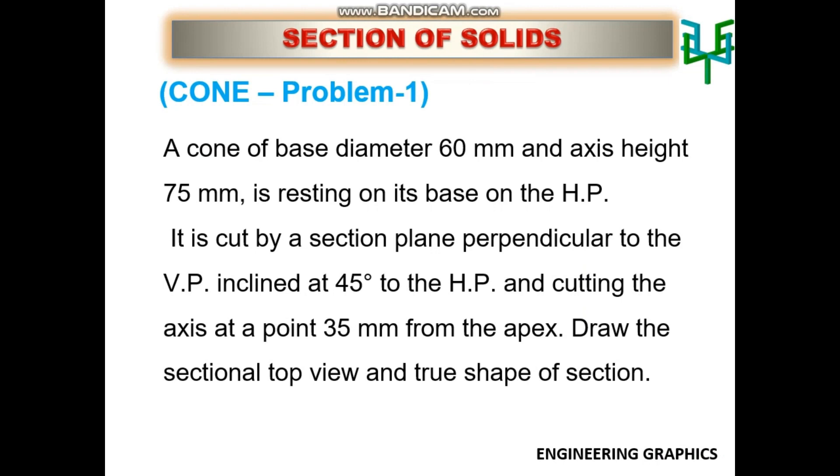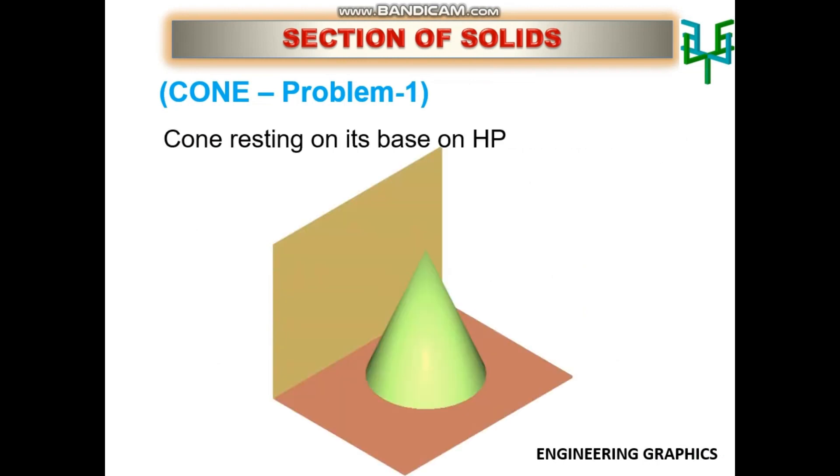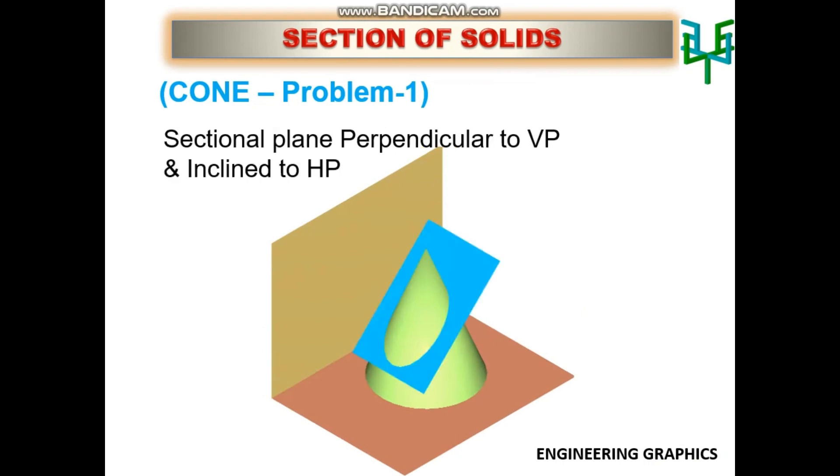Here the cone is standing or resting on the ground with the base. The cone is cut by a sectional plane which is perpendicular to VP and inclined to HP. The top portion of the cone is removed after sectioning. Since the cone is resting with its base on the ground, the base shape of the cone can be seen in the plan.